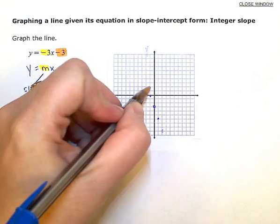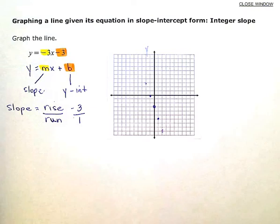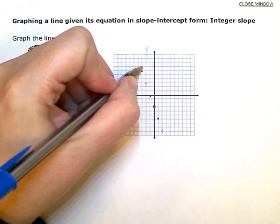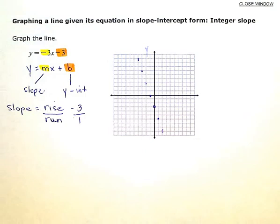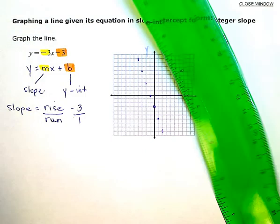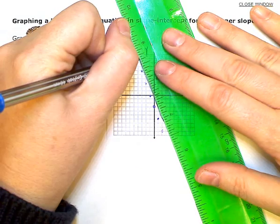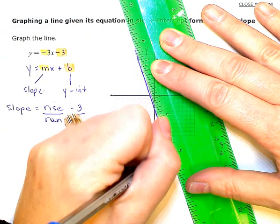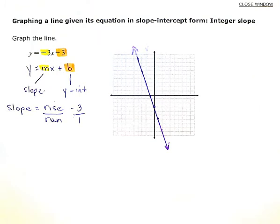And I can do this as many times as I want: up 3, back 1, up 3, back 1, until I get enough points that I have a definite line showing up. And that's my graph.